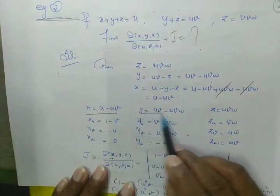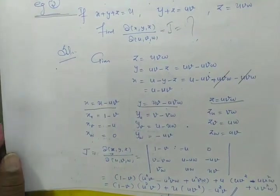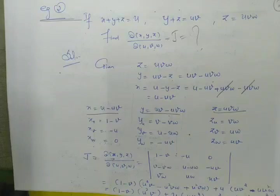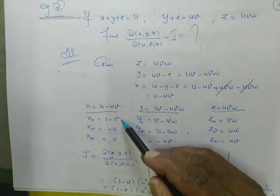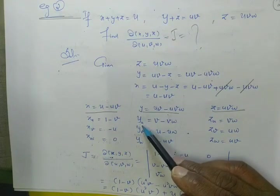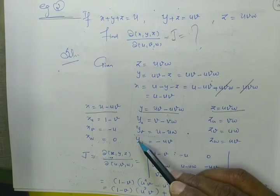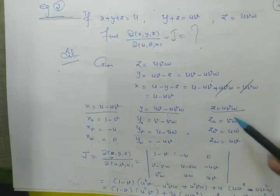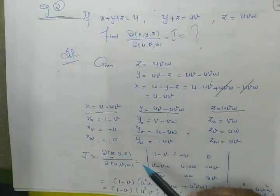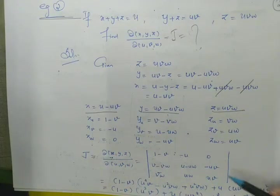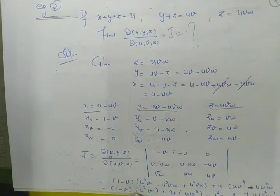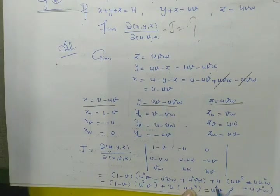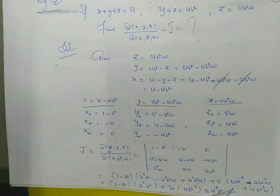With the x, y, z values found, we find x with respect to u, x with respect to v, x with respect to w partially; then y with respect to u, y with respect to v, y with respect to w. After finding all partial differentials and substituting into the determinant J, expanding and canceling gives the value u squared v. This is the Jacobian of partial x, y, z with respect to partial u, v, w.